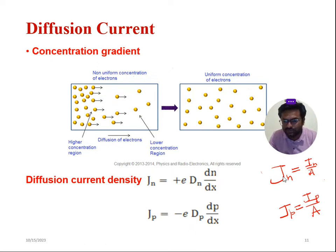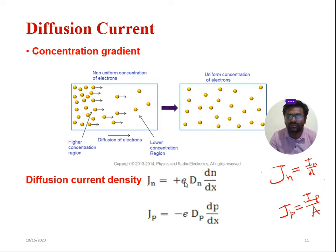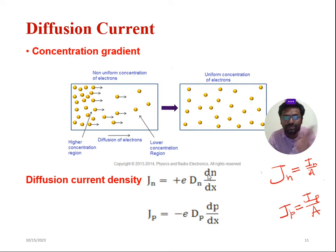So as a part of current density, you can observe here Jn is equal to Ia divided by A. So Jn is current density — the suffix N leads to electron-related current density. So that is given by Jn is equal to e (charge of an electron, sometimes written as q) into Dn. Capital Dn leads to diffusion constant for electrons. Small dn/dx leads to the distribution of electrons along the x-axis or the horizontal axis.